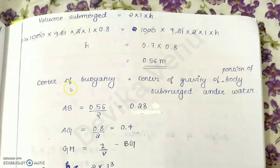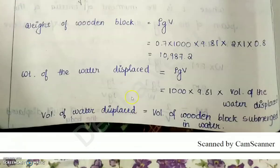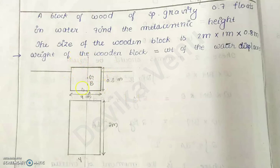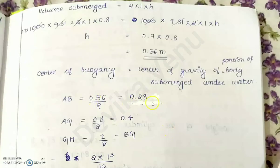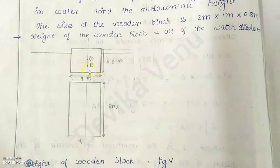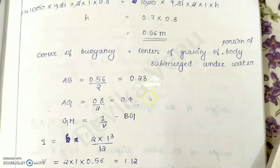The center of buoyancy B is the centroid of the immersed portion. Since depth of immersion is 0.56 m, AB = 0.56/2 = 0.28 m. AG = total depth/2 = 0.8/2 = 0.4 m. These distances from the bottom point A are now known.